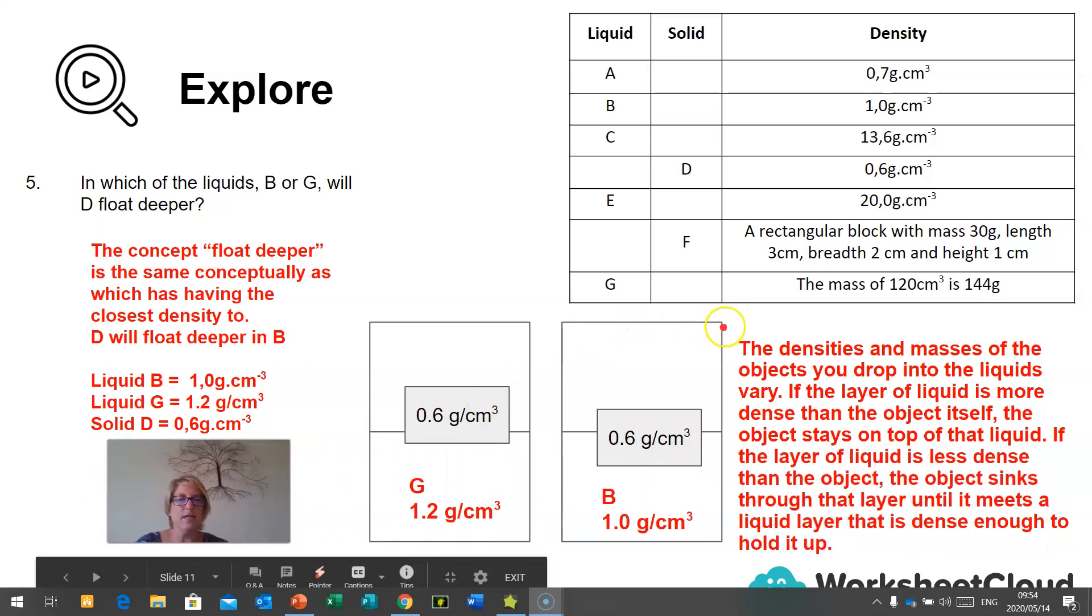The densities and masses of the objects you drop into the liquids vary. If the layer of the liquid is more dense than the object itself, the object stays on top of the liquid. If the layer of liquid is less dense than the object, the object sinks through the layer until it meets a liquid layer that is dense enough to hold it up.